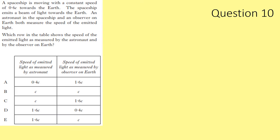Question 10. A spaceship moves at 0.6 C towards Earth and emits a beam of light. This is a trick question: the special theory of relativity states the speed of light is constant regardless of relative motion. Both the astronaut and the Earth observer measure the speed of light as 3×10⁸ m/s. Answer: B.